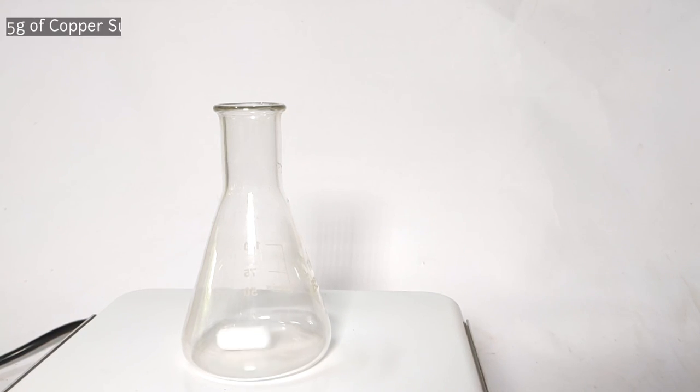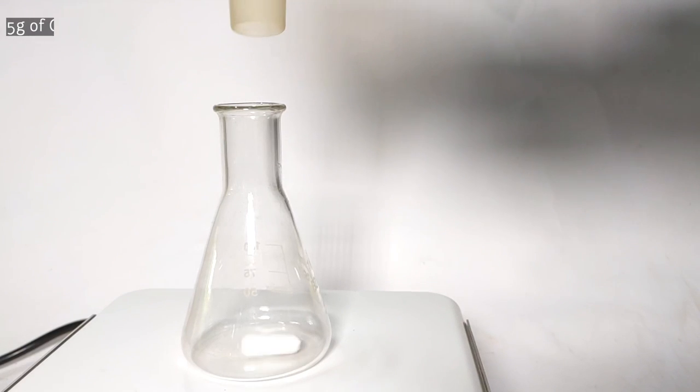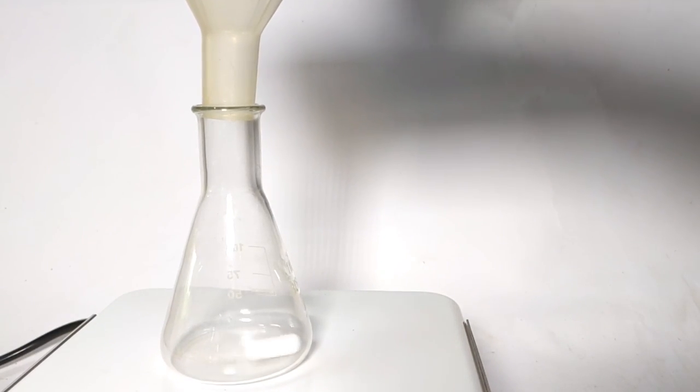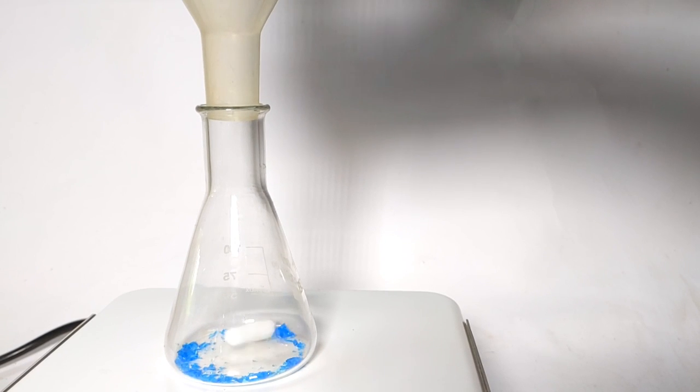Start by transferring 5 grams of copper 2 sulfate pentahydrate to the 100 milliliter conical flask kept on a magnetic stirrer with a stirring bar inside. I use this funnel as I always spill the solid chemicals while transferring them.